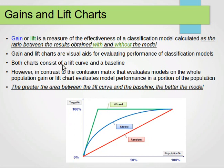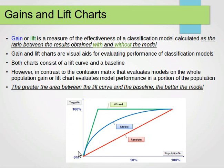These are visual aids for evaluating performance of classification models. They consist of a lift curve and a baseline. If the red line is our baseline and the blue line is our curve, then we want to increase the area between these two — we want the blue curve to be as far as possible from the red line.